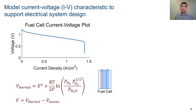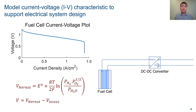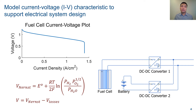The characteristic comes from the Nernst electrochemistry equation and internal voltage losses that you can implement in a Simscape component block. With this model, you can design the electronics in the system, like the DC to DC converter that regulates the voltage. You can also investigate a hybrid system with fuel cells and batteries combined.